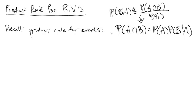If you remember, we could just rearrange the definition of conditional probability to get that the probability of A intersect B — as in the events A and B both occur — is equal to the probability of A occurring times the probability of B occurring given that A has occurred.